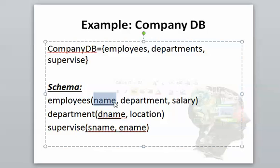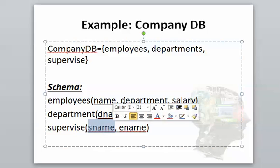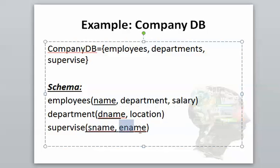The primary key means names are unique. The supervise relation has a supervisor name and an employee name. To get more information about the supervisor we need to get it from employees — that's where we get the department and salary. We join that with table employees, which are things we study in the first database course on schema definition.